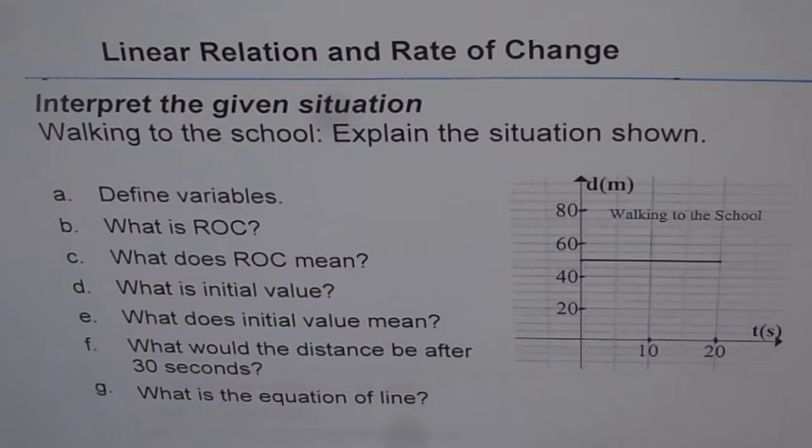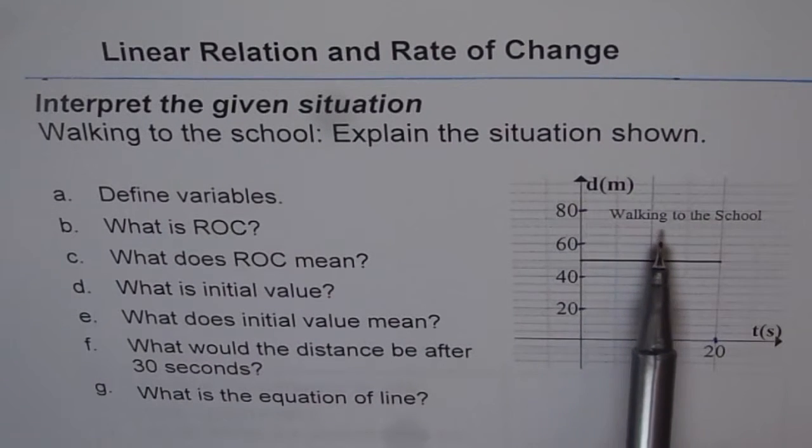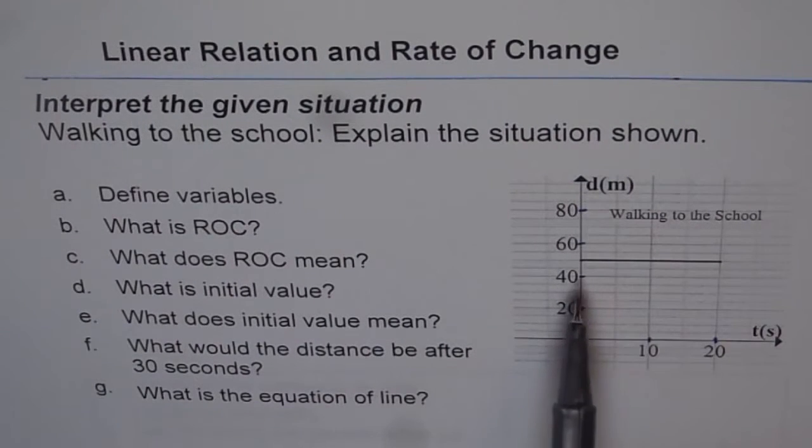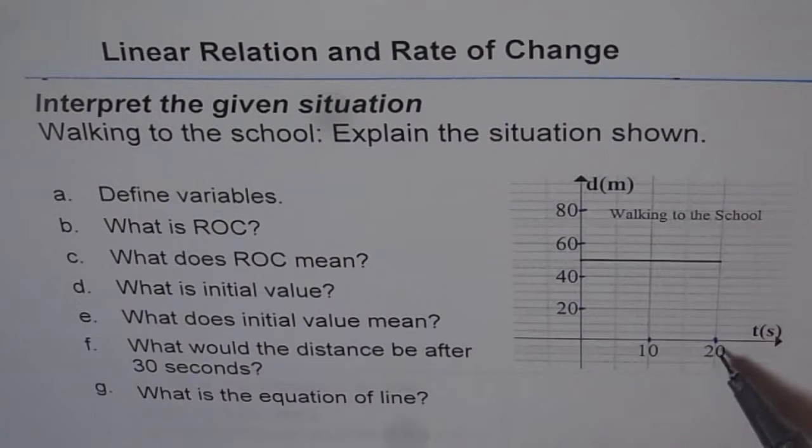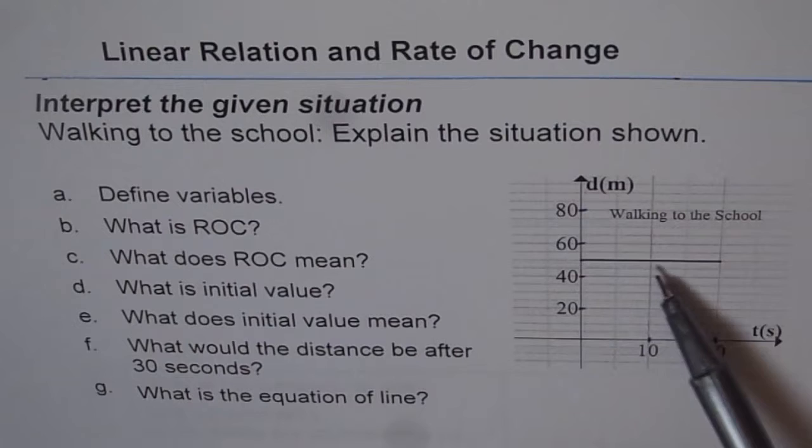This is how I see the situation. The graph shows a person walking to the school. Since we have a horizontal line, that means the distance is not changing with time. Time is changing—10 seconds, 20 seconds and so on. And the distance is not changing.